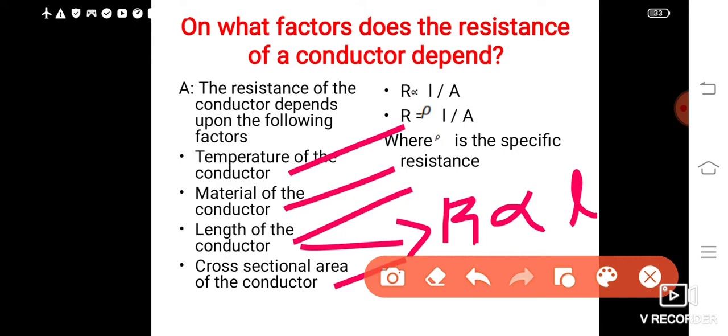Then cross-sectional area of the conductor. So for this you have to write R is inversely proportional to, inversely proportional to here, 1 divided by A. That is, R is inversely proportional to cross-sectional area of the conductor.